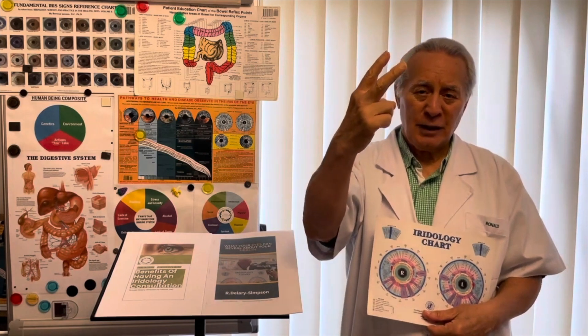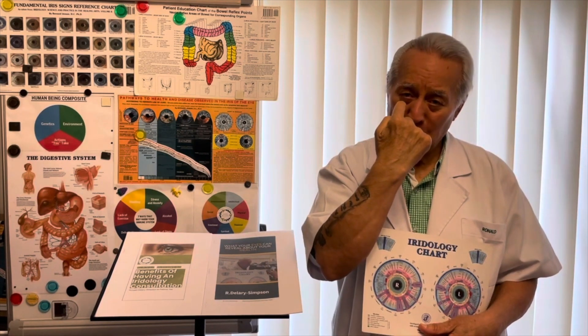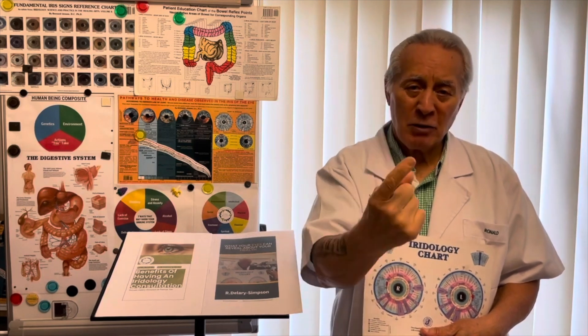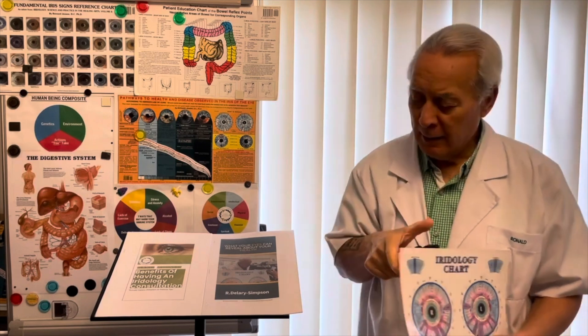There are two sciences involved here. There's iridology, which is reading of the iris and pupil, and sclerology, which is reading of the sclera, the whites of the eyes.